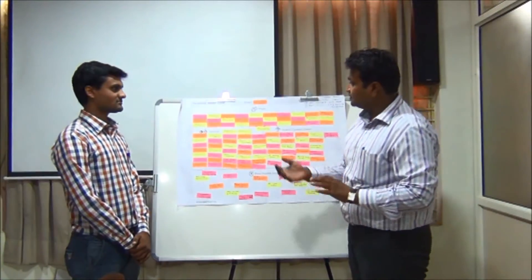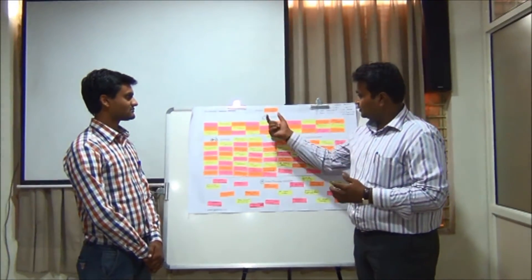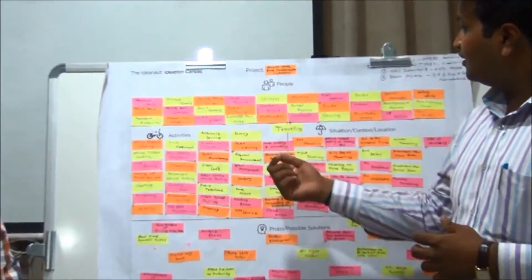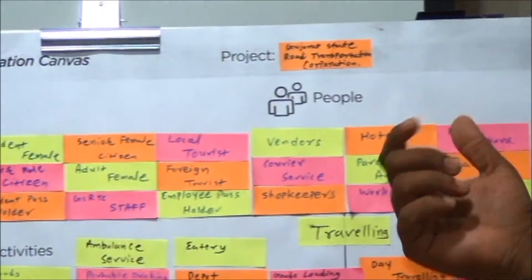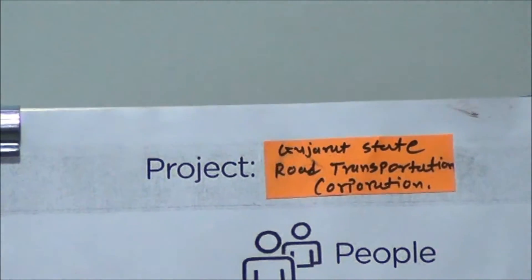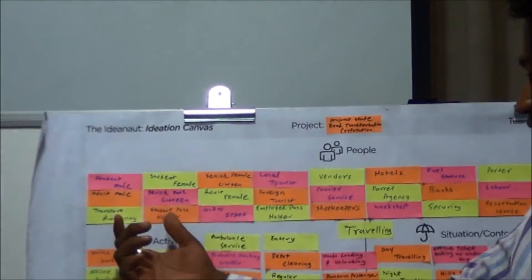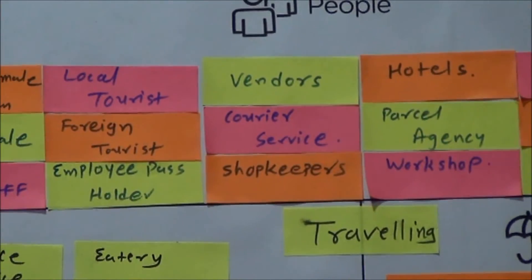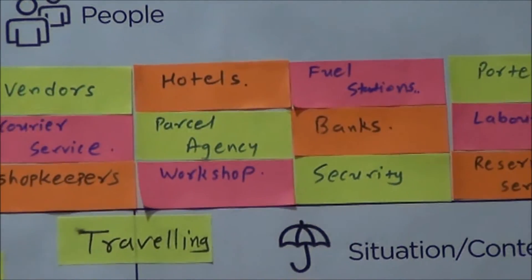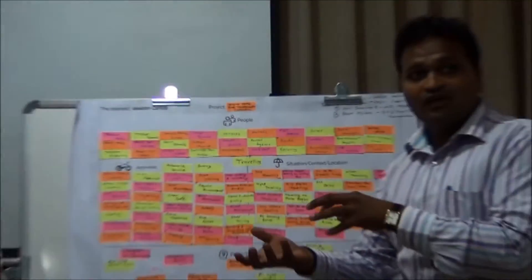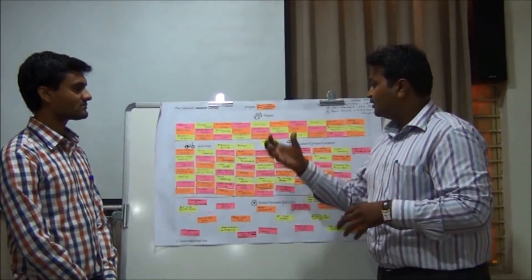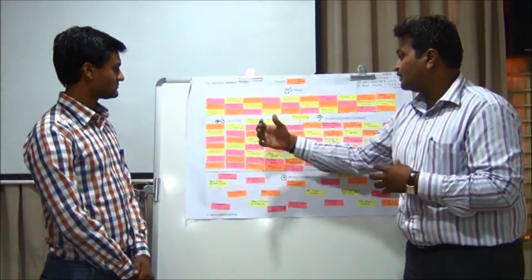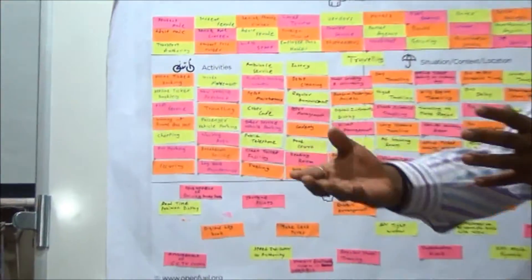Hello friends, this is our second canvas: the ideation canvas. Same project — Gujarat State Transportation Corporation, problems in GSRDC. We classify the same people as in our first canvas: students, adult male, senior citizens, GSRDC staff, vendors, shopkeepers, porters, neighbors, reservation services, and safety officers. Users as well as stakeholders are clubbed together as people in this canvas. The activities of these people are the same as performed in our first canvas.